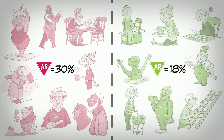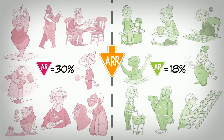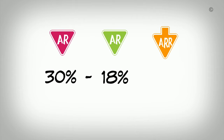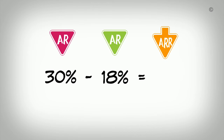Because the risk for a fracture is lower following the intervention, we can determine the absolute risk reduction, or ARR. We calculate this by subtracting the absolute risk of those exposed to the intervention from those not exposed. So 30% minus 18% gives us an absolute risk reduction of 12%, which means the intervention lowered the risk of a fracture by 12%.